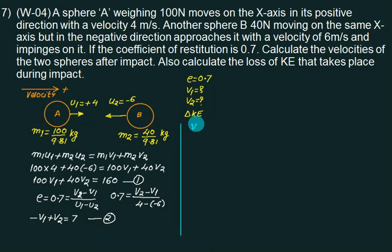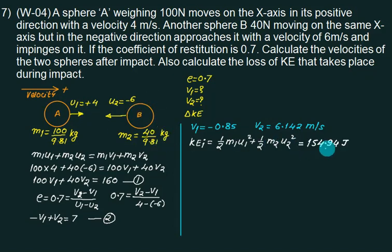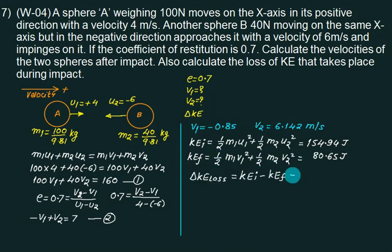Solve 1 and 2 and check your answer. Is V1 come out to be minus 0.85 and is V2 come out to be 6.1. Check your initial quantity. Half M1 U1 square, half M2 U2 square. Put full value. 100 divided by 9.81 into 4 square, 40 divided by 9.81 minus 6 square, 154.94. Similarly solve for final kinetic energy. The loss of kinetic energy come out to be initial minus final, is 74.29.